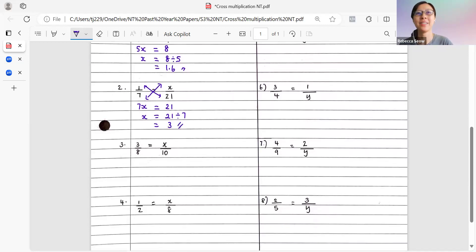Third question. 3 out of 8 equals to x out of 10. Draw the arrows across both diagonals. Multiply. So we take 8 multiplied by x, we get 8x equals to 3 times 10, which is 30. So from here, we find x to be 30 divided by 8. And that would be 3.75.